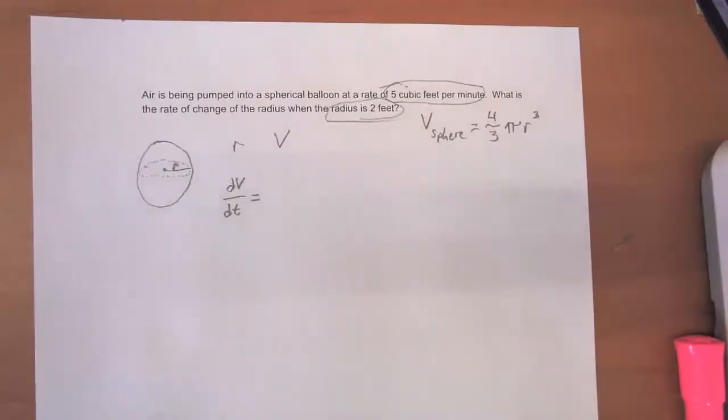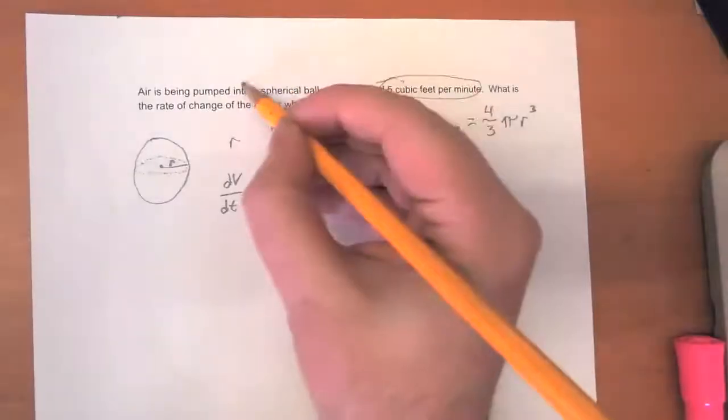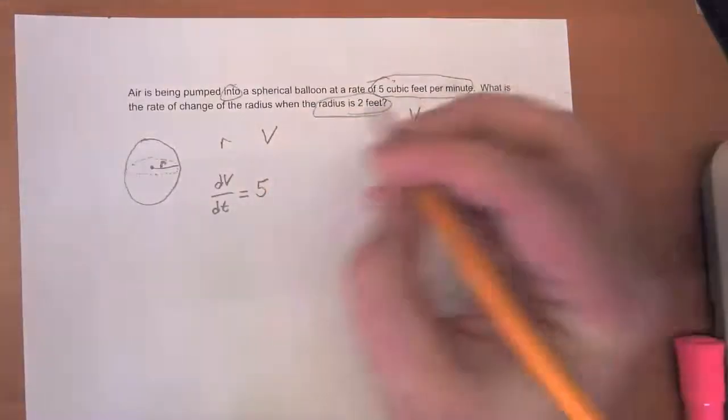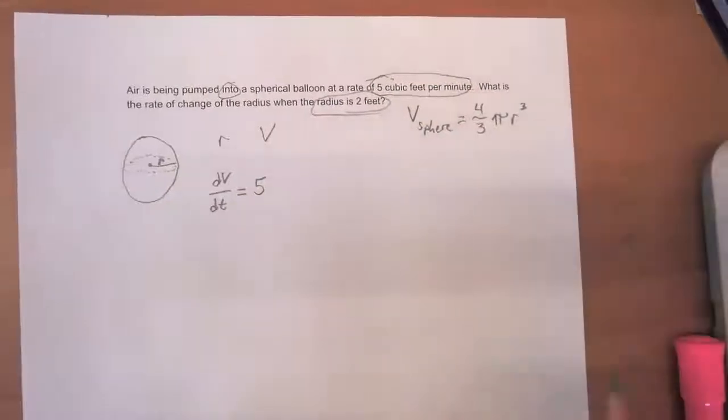What do you think the difference between them is and which do you think is the right one to use for this problem? We would use positive five to express that the volume is increasing over time and a negative value would say that it's shrinking over time. In this case, air is being pumped into the spherical balloon, so the rate is changing at positive five cubic feet per minute.